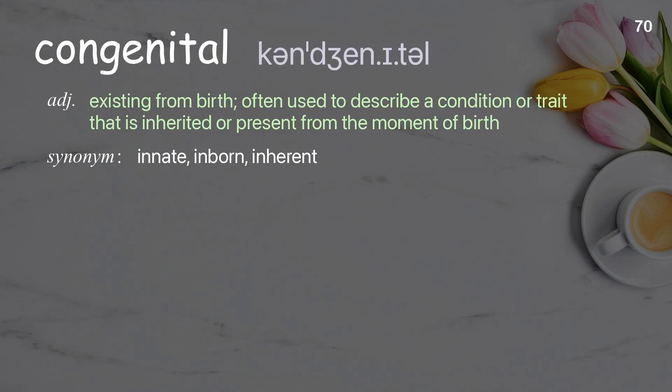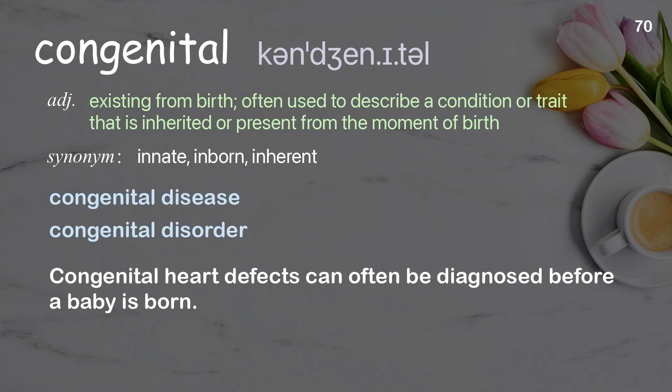Congenital: Existing from birth; often used to describe a condition or trait that is inherited or present from the moment of birth. Examples: Congenital disease. Congenital disorder. Congenital heart defects can often be diagnosed before a baby is born.